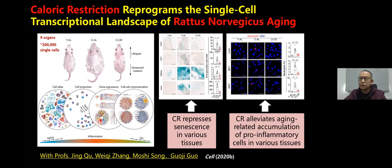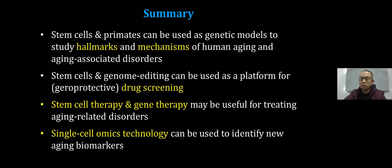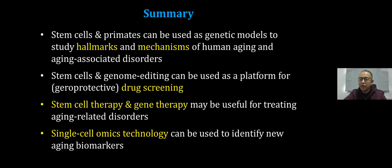To summarize, we have developed human stem cell models and primate models to study the mechanism and regulation of aging. The combination of stem cell and gene editing technology can be used to screen drugs for prevention or treatment of aging-related disorders. Stem cell therapy and gene therapy are expected to be applied to treatment of aging-related disorders. The application of single-cell technology helps to reveal new biomarkers of aging.